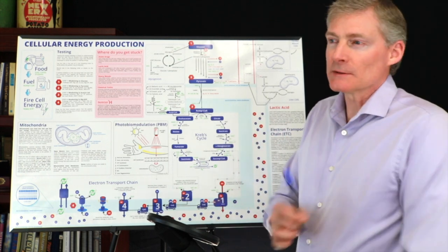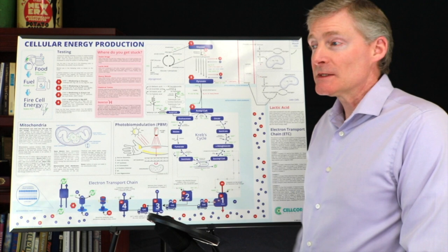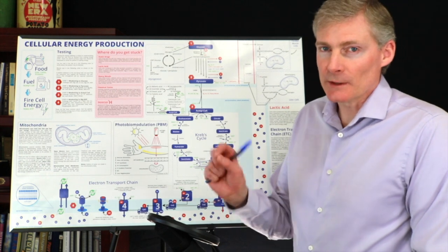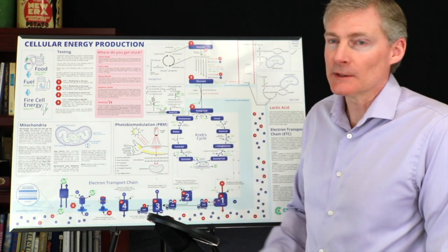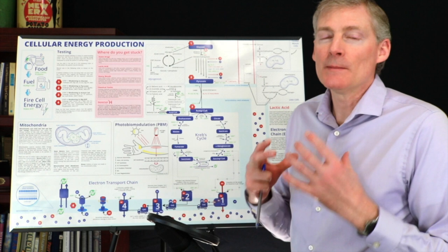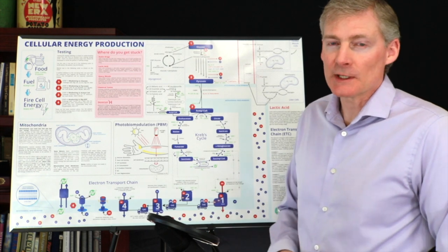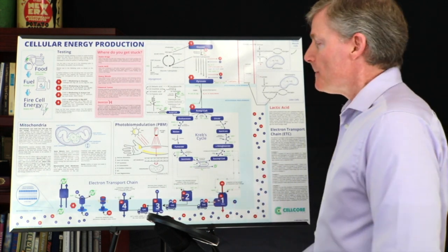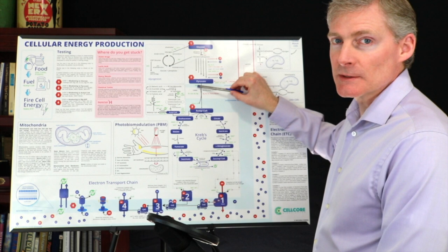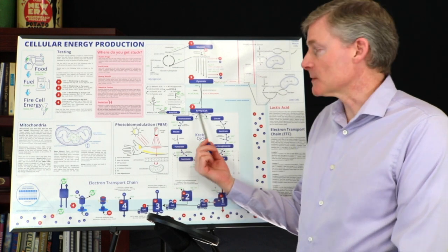So every cell is loaded with mitochondria, anywhere from 2,000 to 10,000 mitochondria. Some have 20,000, some have 3 million. Some rare nerve cells have millions of mitochondria. But most cells have anywhere from 2,000 to 10,000 mitochondria. The volume of the cell is primarily mitochondria. It's all about the mitochondria. This pyruvate needs to slip between or through the two membranes.